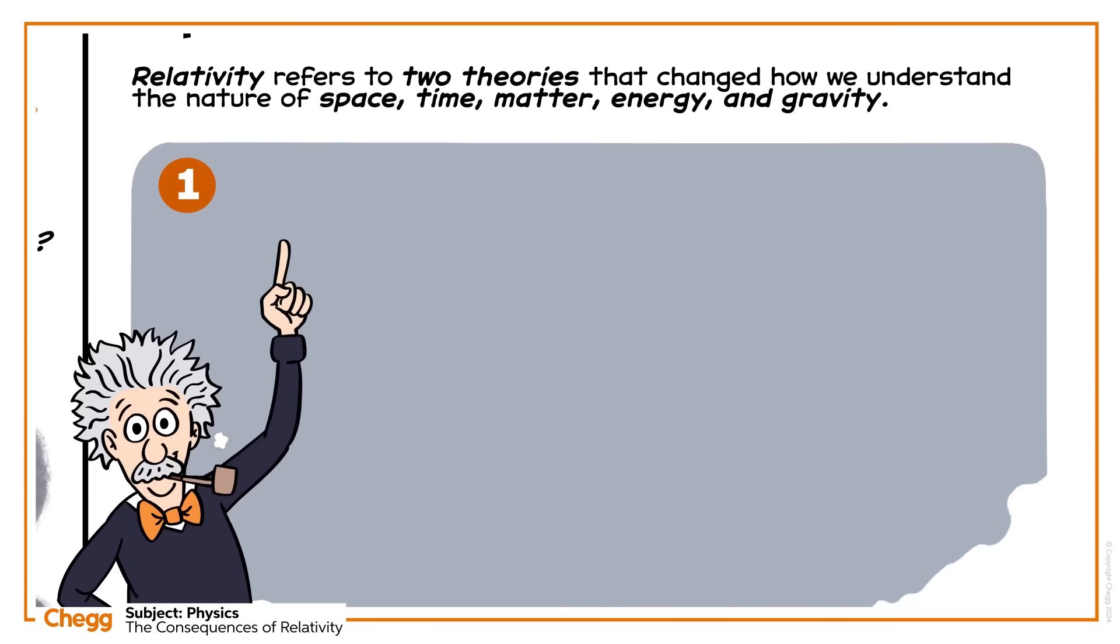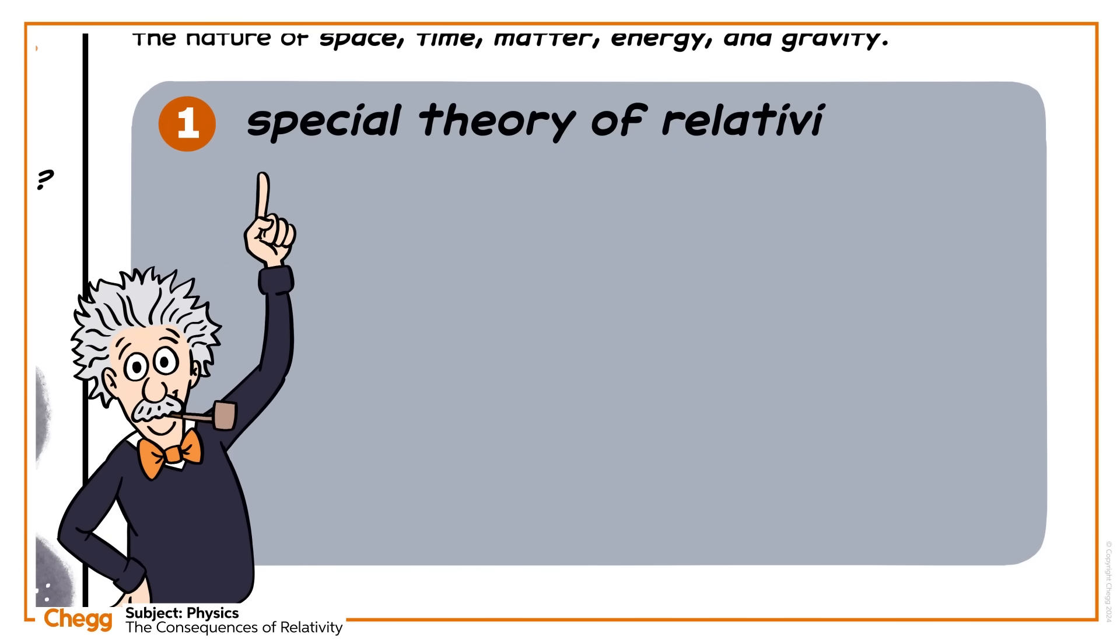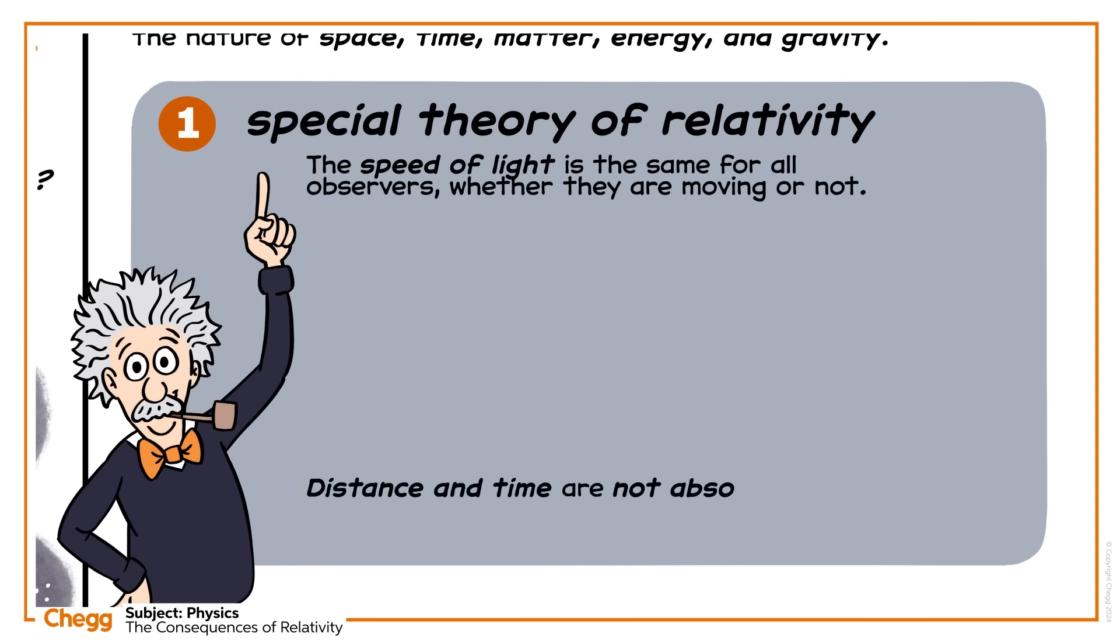First, Einstein came up with his special theory of relativity, which says that the speed of light is the same for all observers, whether they are moving or not. This means distance and time are not absolute, but depend on the relative speed of the observer and the observed object.